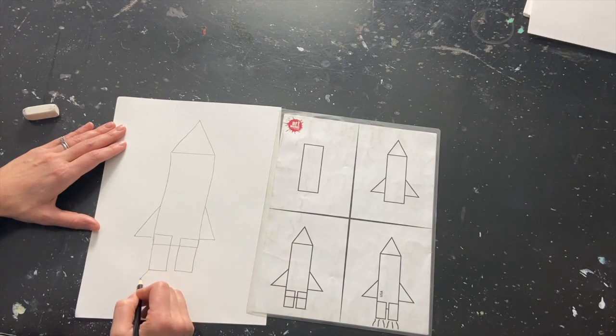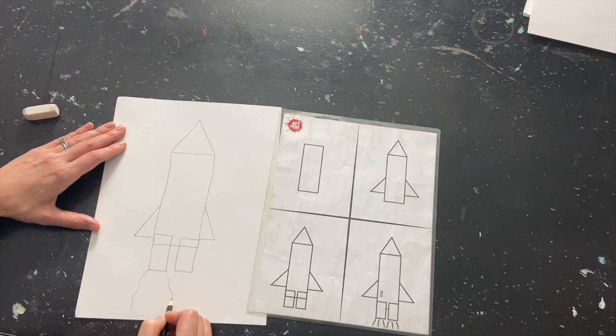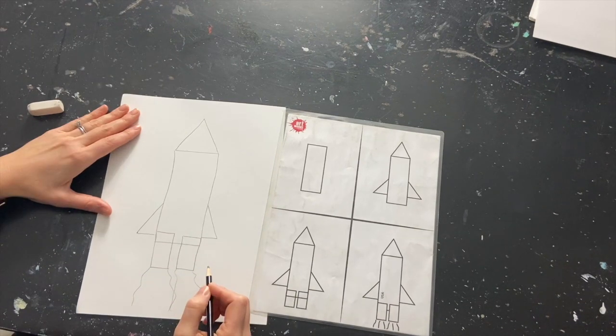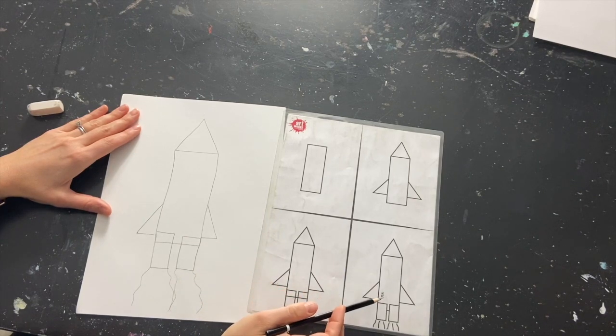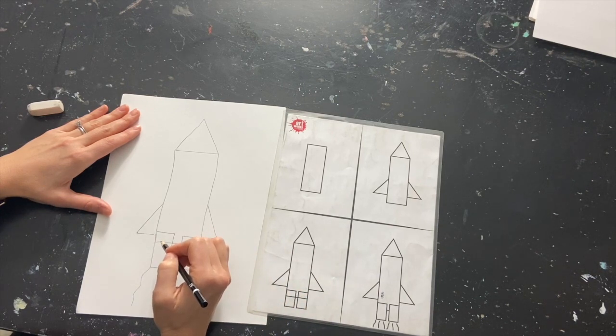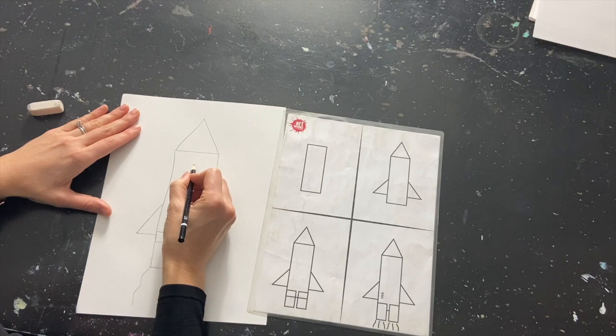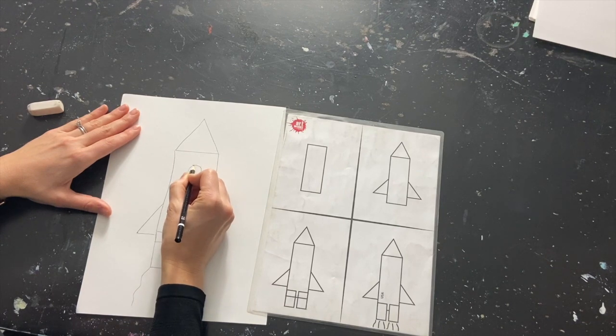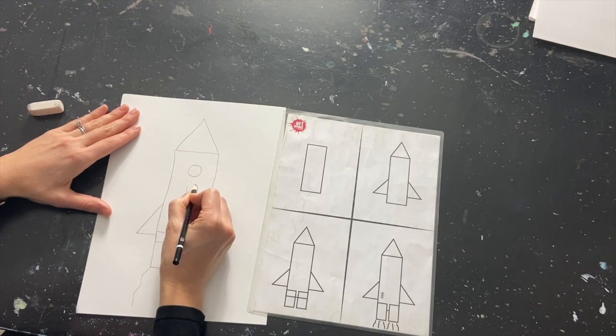Next I'm going to add some flames coming out of the bottom. Now the last thing that is listed here on the rocket ship is USA so you can feel free to add that if you want to. For me, you know what I want to add? I want to add some little windows so I'm going to add three little windows.